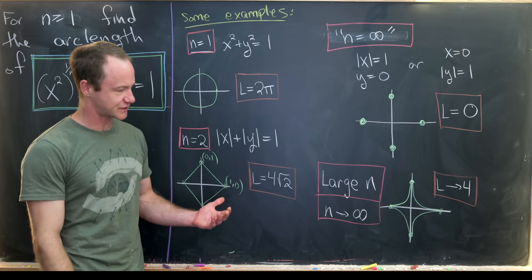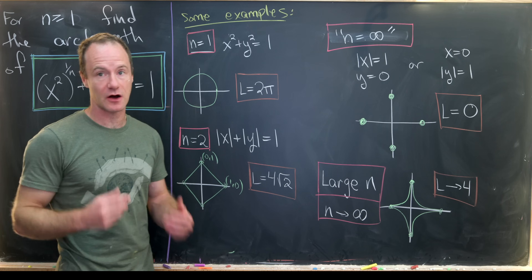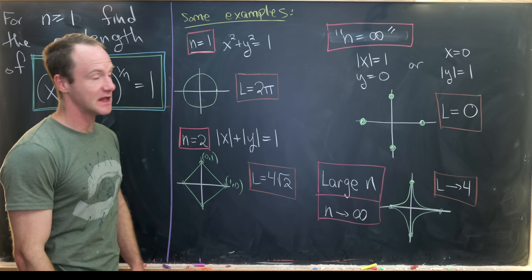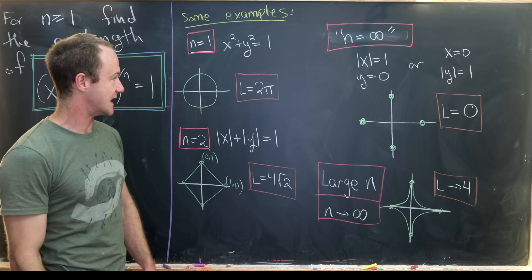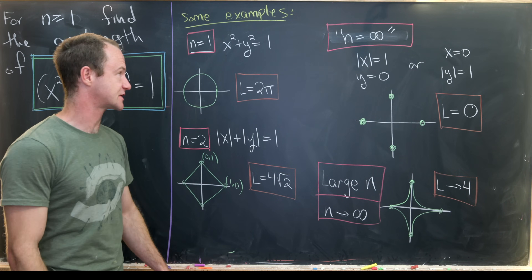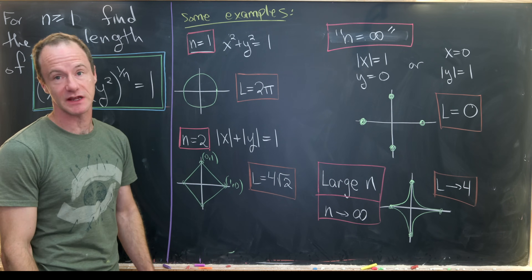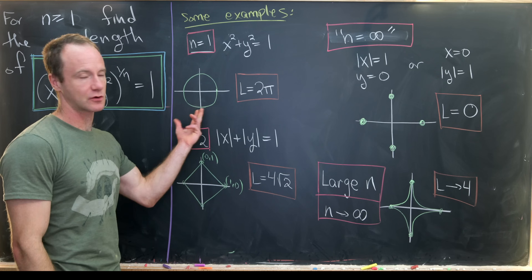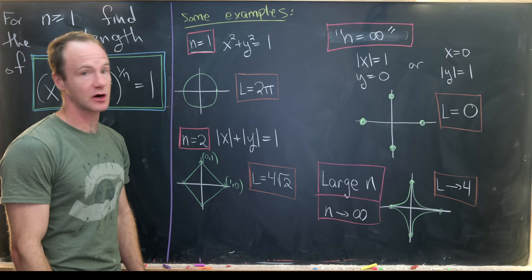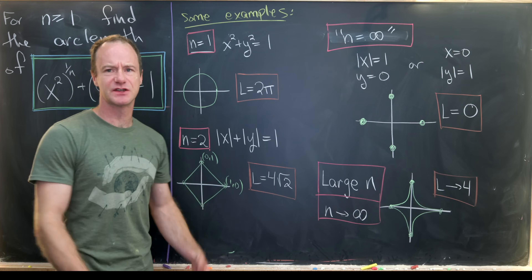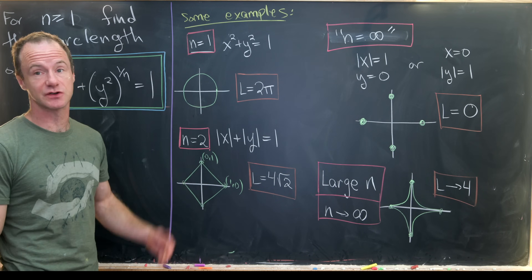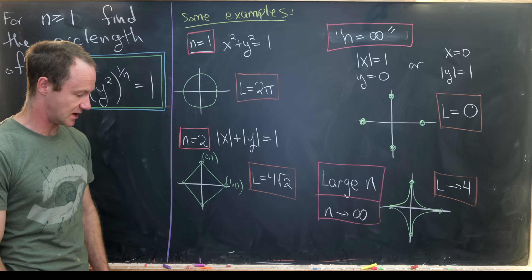Before we get started on our calculation, let's look at some examples. For the n=1 case, this just collapses to the equation of the circle x² + y² = 1. I've drawn a circle right here and that clearly has arc length 2π. That's the circumference formula for a circle of radius 1.